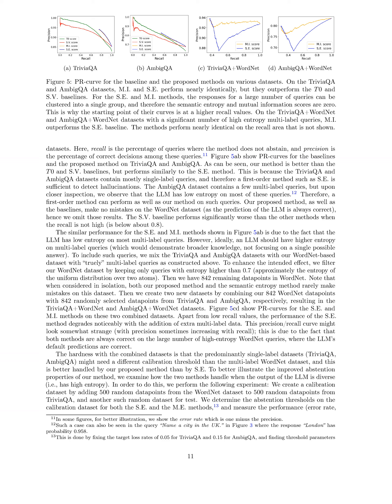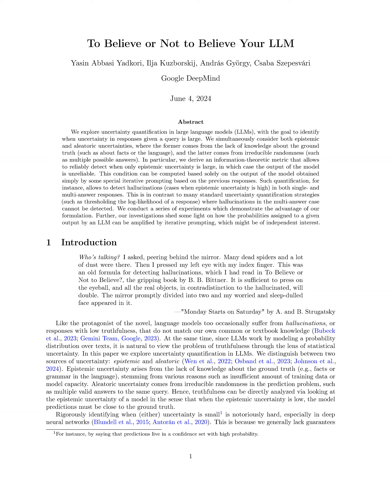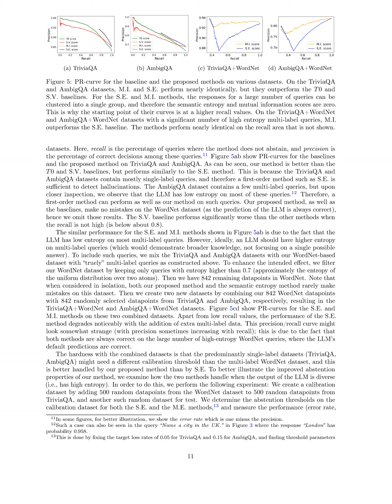The new method achieved better results compared to baseline methods on closed-book open-domain question-answering tasks. Focused on detecting hallucinations by quantifying epistemic uncertainty using an information-theoretic metric based on mutual information, the method outperformed baselines such as the probability of the greedy response, the semantic entropy method, and the self-verification method. The proposed method showed improved precision-recall trade-offs on datasets like TriviaQA and AmbigQA, especially with multi-label queries. When combined with a WordNet dataset containing high entropy queries, it demonstrated enhanced abstention properties compared to the semantic entropy method.